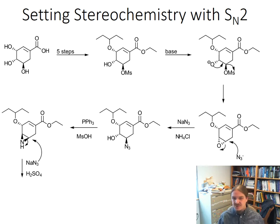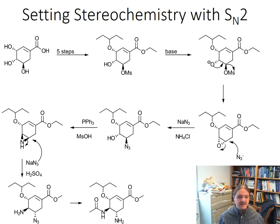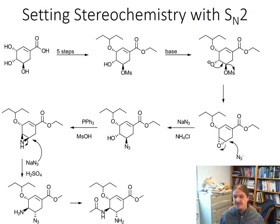The azide is reduced to an amine and the alcohol is converted into the mesylate to set up another internal SN2 reaction. The result is a three-membered ring amine called an aziridine, which likewise in the presence of nucleophiles and acid can undergo an SN2-type ring opening to give something that looks like oseltamivir with the correct stereochemistry and nitrogens in the correct positions. Just two more steps are then needed to convert it into oseltamivir, the structure shown at the bottom of the screen.